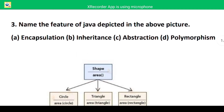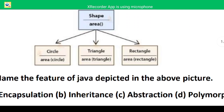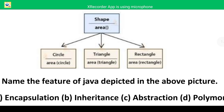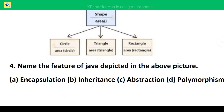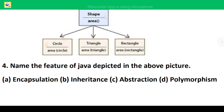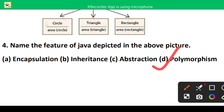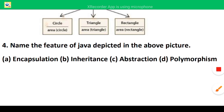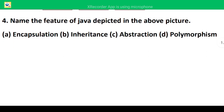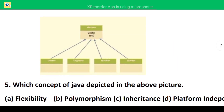In question three, there is a class named Shape with a method named area. There are three versions of the method: area for circle, area for triangle, and area for rectangle. Here the method area is overloaded — the same method name with different arguments. So again the correct answer is polymorphism. The first three questions all depict the Java feature polymorphism.